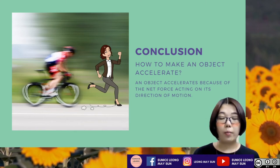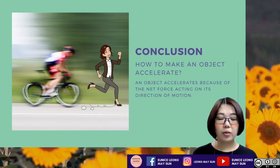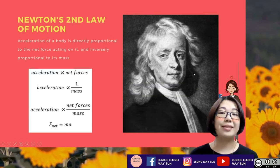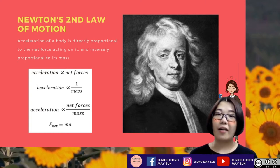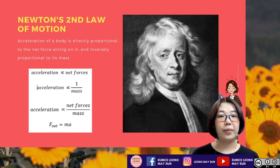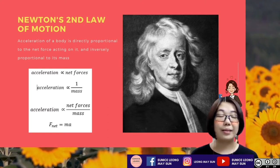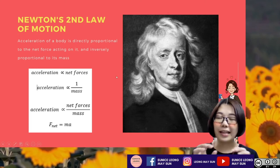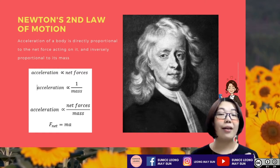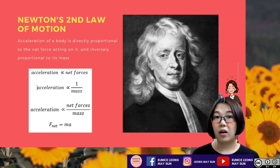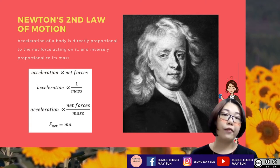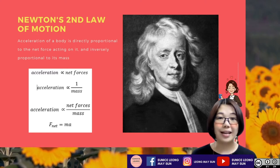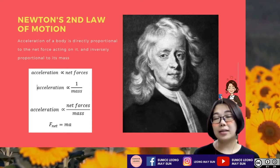So in order to make an object accelerate, the object accelerates because there's a net force acting in its direction of motion. When there is a sum of forces pushing towards the right, the crate will accelerate towards the right. When the force is removed, the crate is no longer accelerating, but moves with constant velocity. Newton's second law of motion states: acceleration of a body is directly proportionate to the net force acting on it. Please be alert — it's the net force acting on the object, not just force, because there may be multiple forces acting.